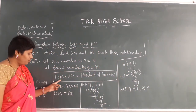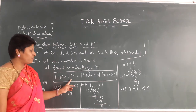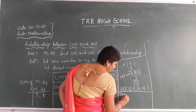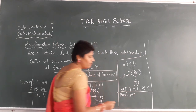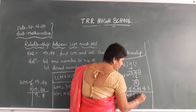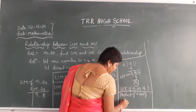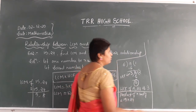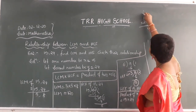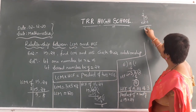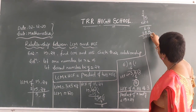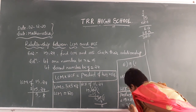Now find the product of the 2 numbers, x and y, which are 15 and 44. Product of x and y is nothing but 15 into 44. 4 fives are 20, write 0 carry 2. 4 ones are 4, plus 2 gives 6. Then 10 fives are 50... So the product of 15 and 44 is 360.